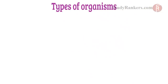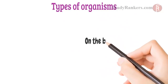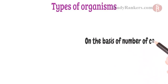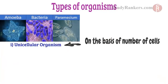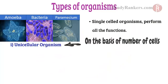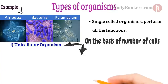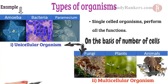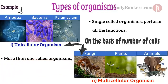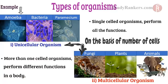Types of organisms. On the basis of number of cells, organisms are of two types. First, unicellular organisms — these are single-celled organisms which perform all the functions. Examples are amoeba and bacteria. Second, multicellular organisms — organisms made up of more than one cell which perform different functions in the body and also form various body parts. Examples are fungi, plants, and animals.